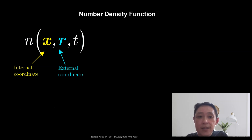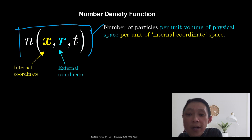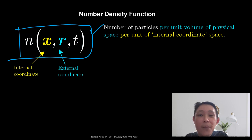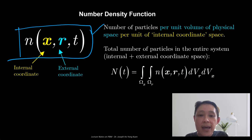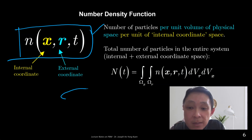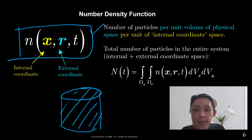To summarize, the number density function is a function of the internal coordinate vector x. The unit of the number density function would be number of particles per unit volume of the physical space per unit of the internal coordinate space. If you know the number density function and are interested in the total number of particles in the entire system throughout the internal and external coordinate space, you simply integrate over the domain of both the external and internal coordinates to get the total number of particles in the system.